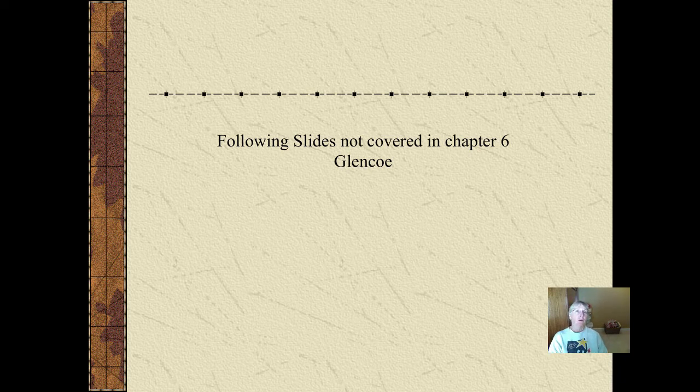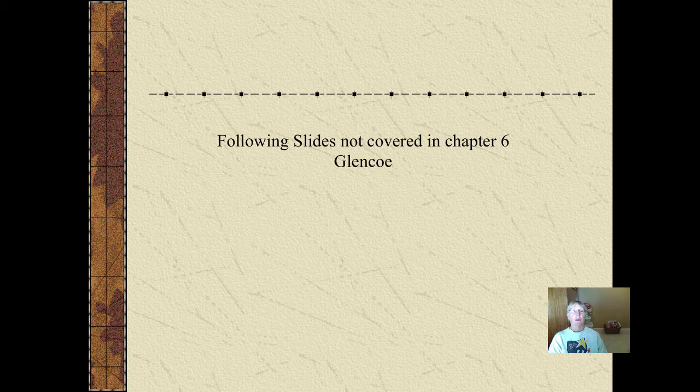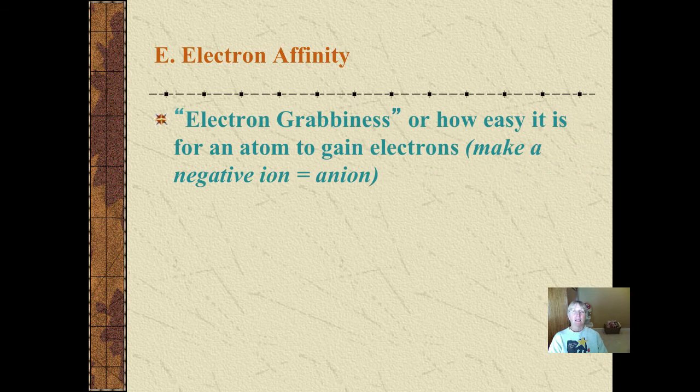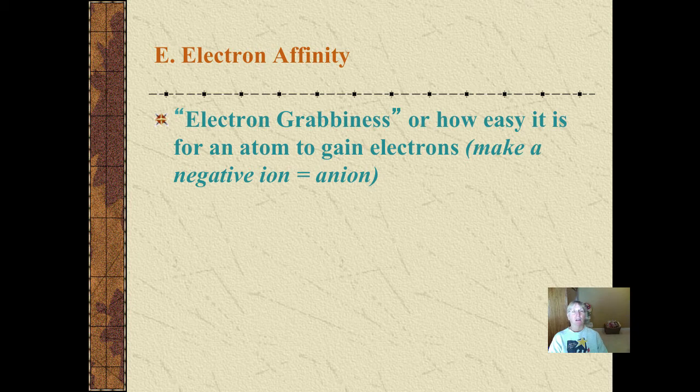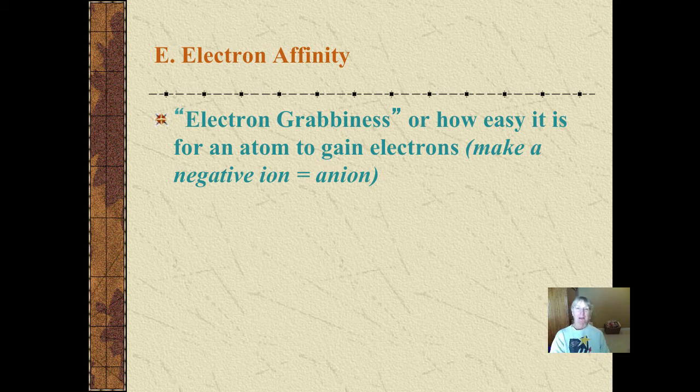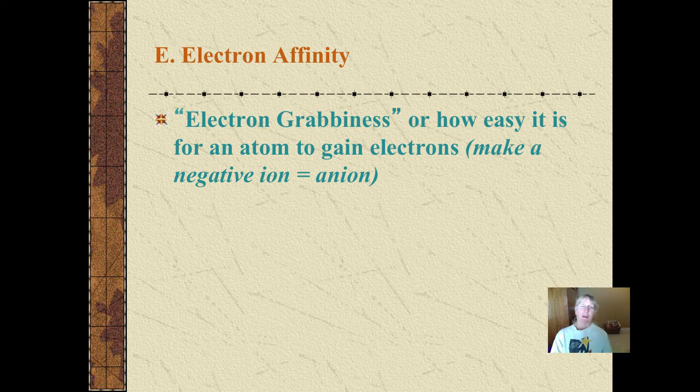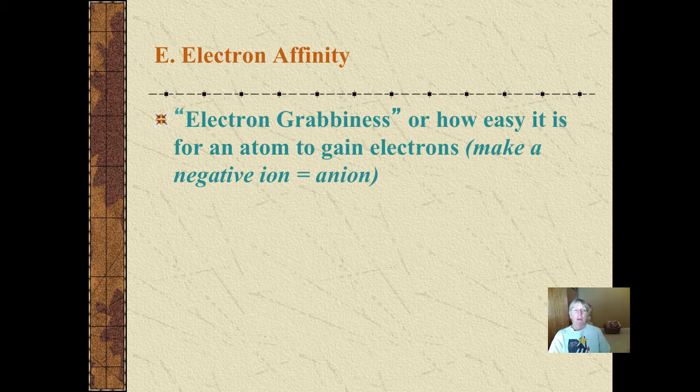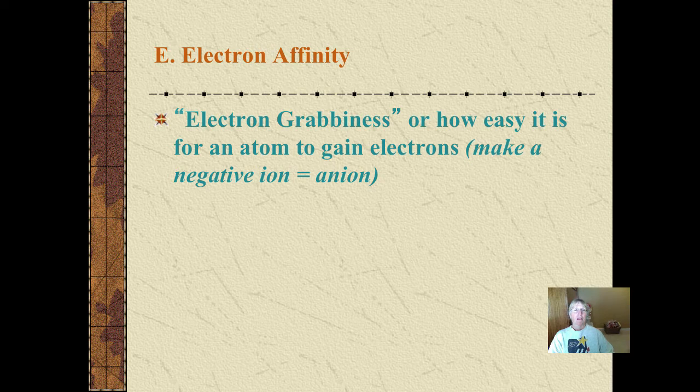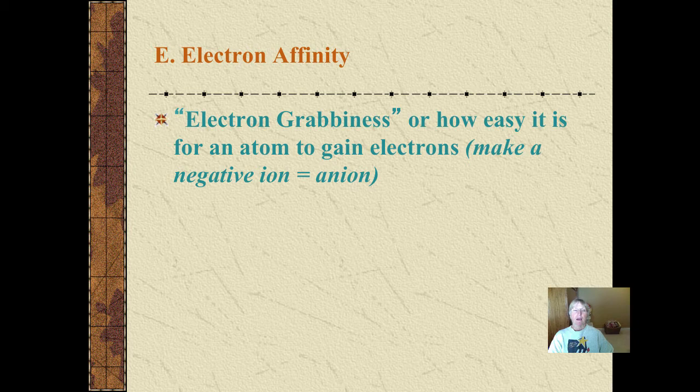So far we've studied two difficult ones, relatively speaking, electronegativity and ionization energy. Well, the next concept, electron affinity, is kind of the opposite of ionization energy. Ionization energy measured how hard or easy it was for another element to take another element's electrons. And some elements are electron losers and some are electron grabbers. Well, this is about a way to measure the grabbiness that one atom has for another. So electron affinity shows how easy it is for an atom to gain electrons and become a negative anion.